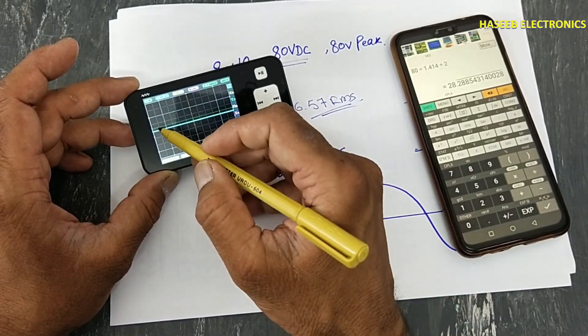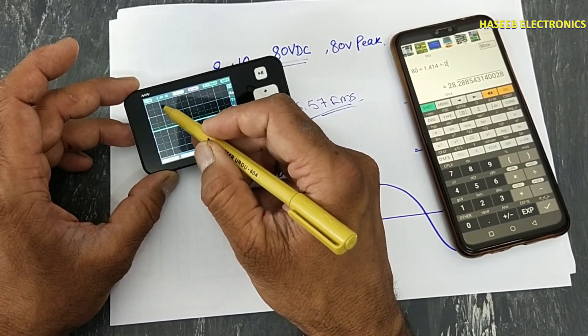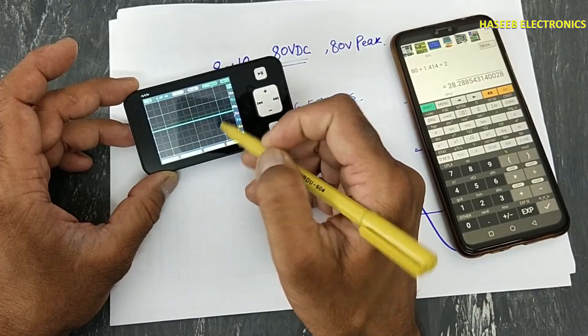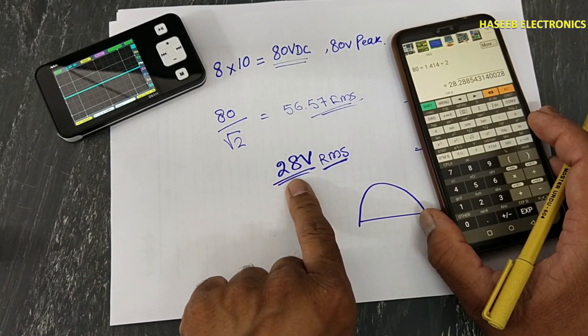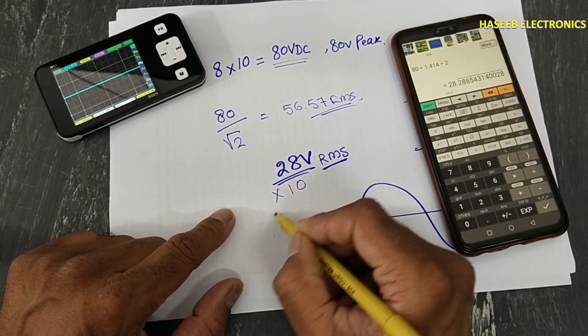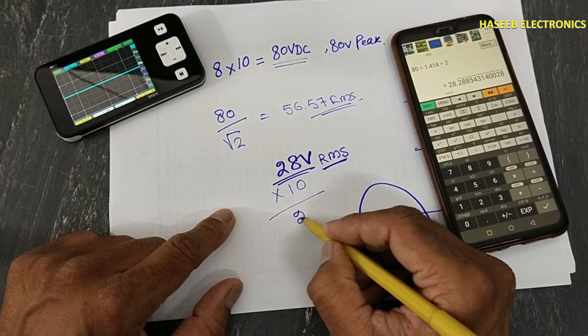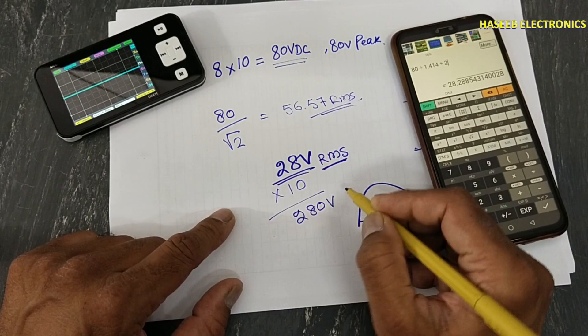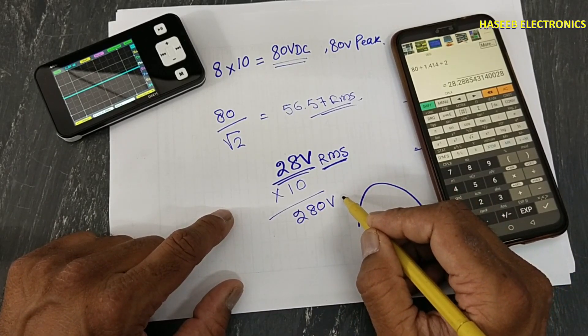Now if we will use 10x probe, multiply by 10. At that time, that oscilloscope can test up to 280 volts RMS.